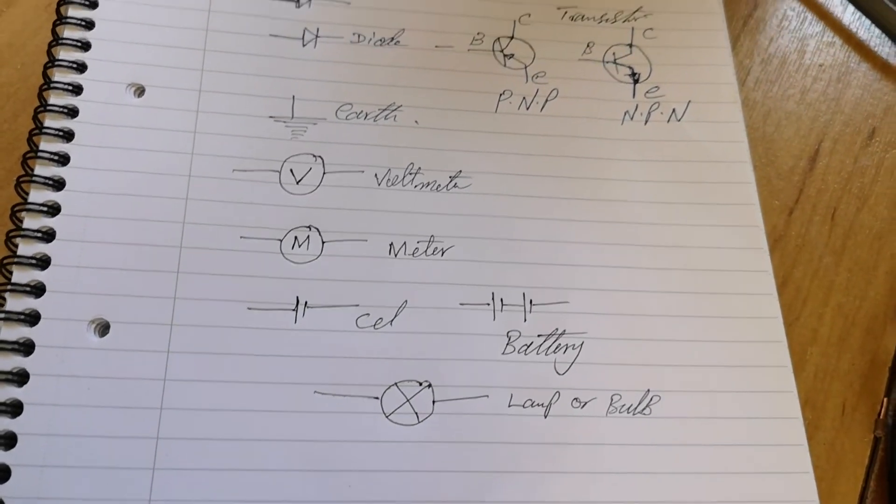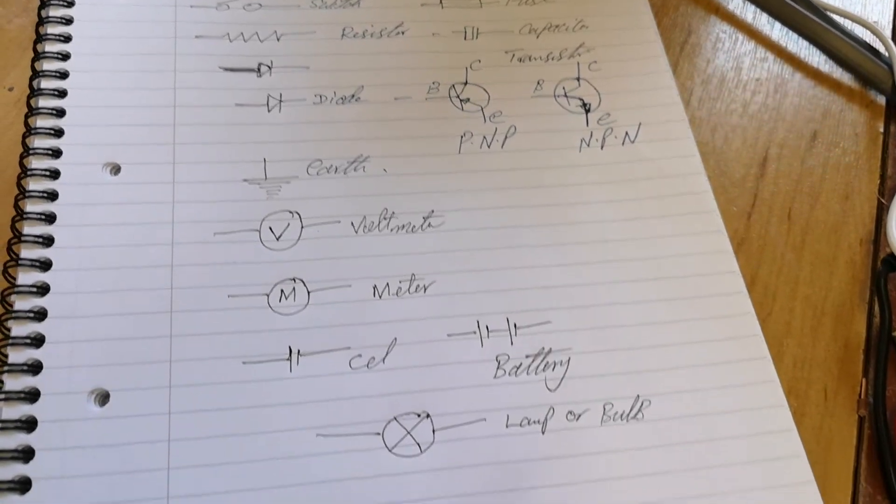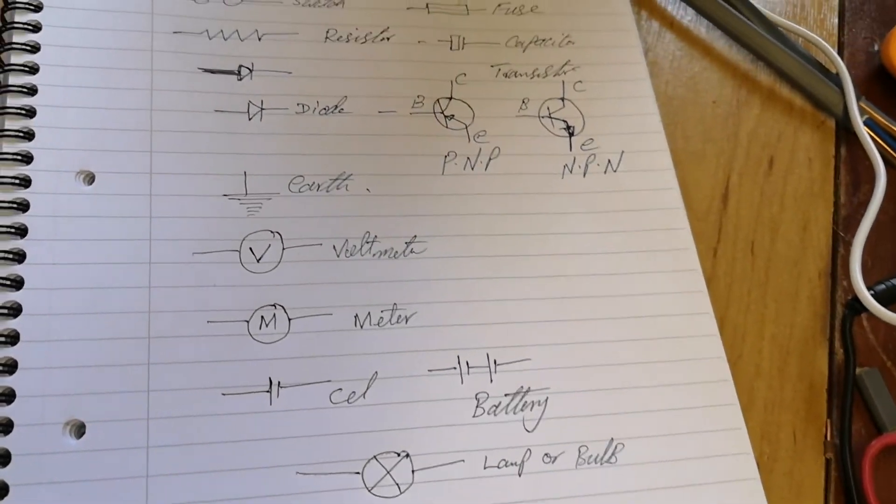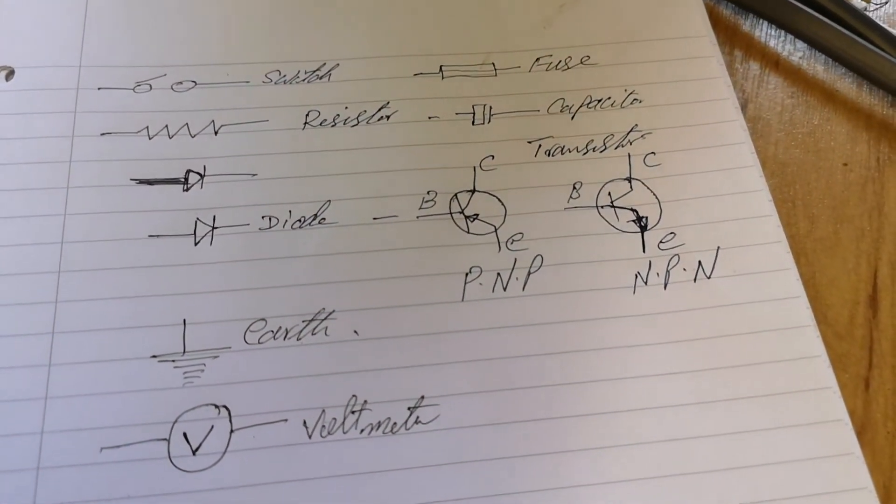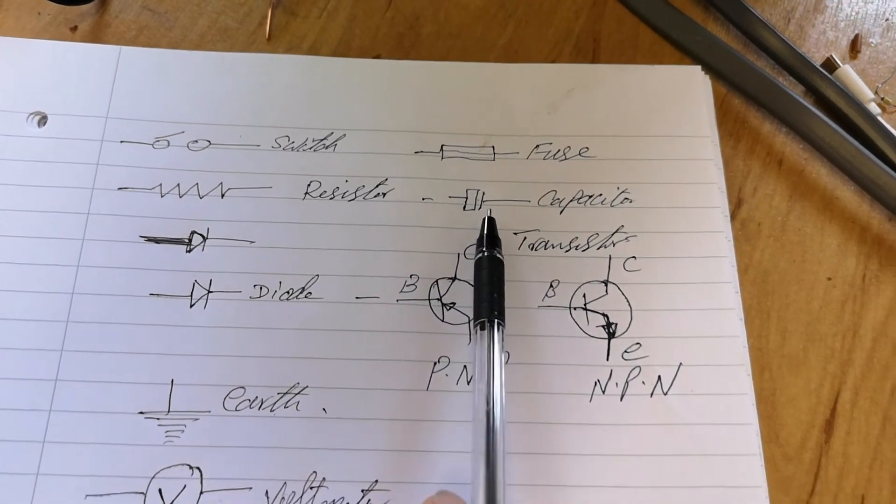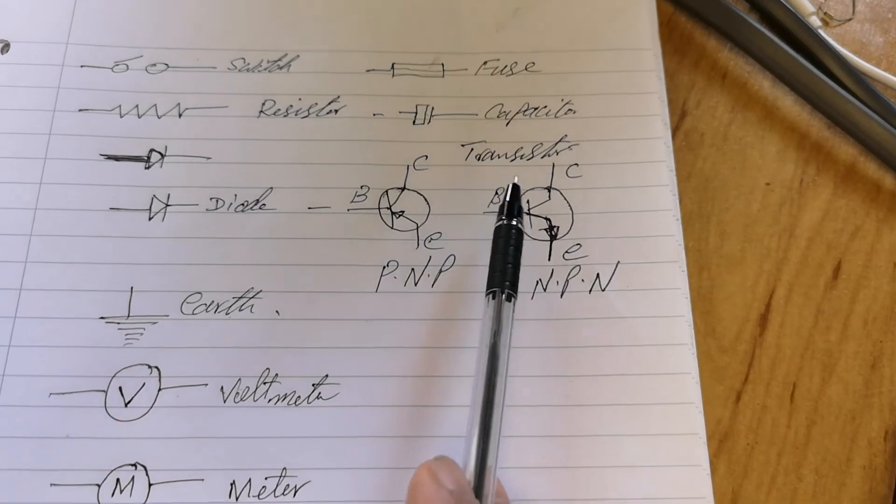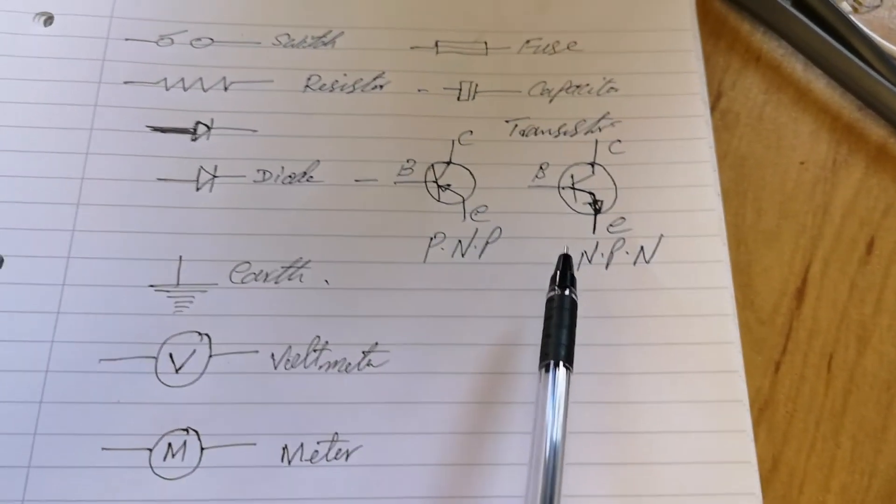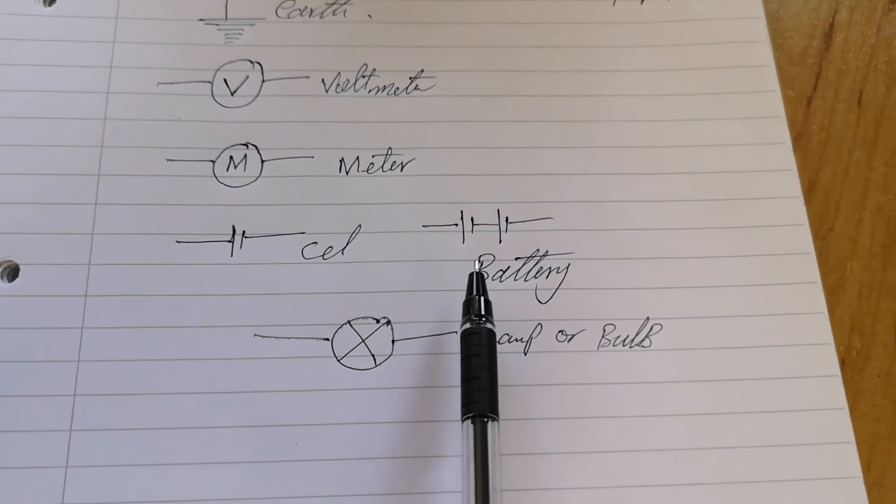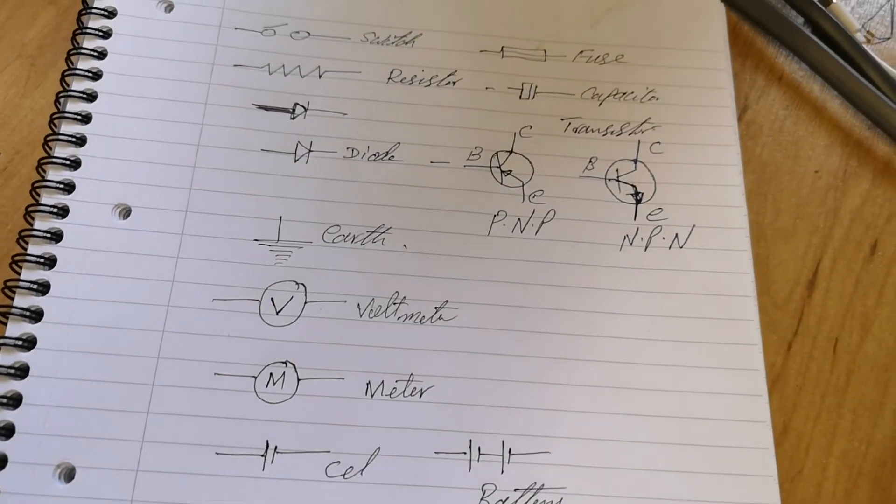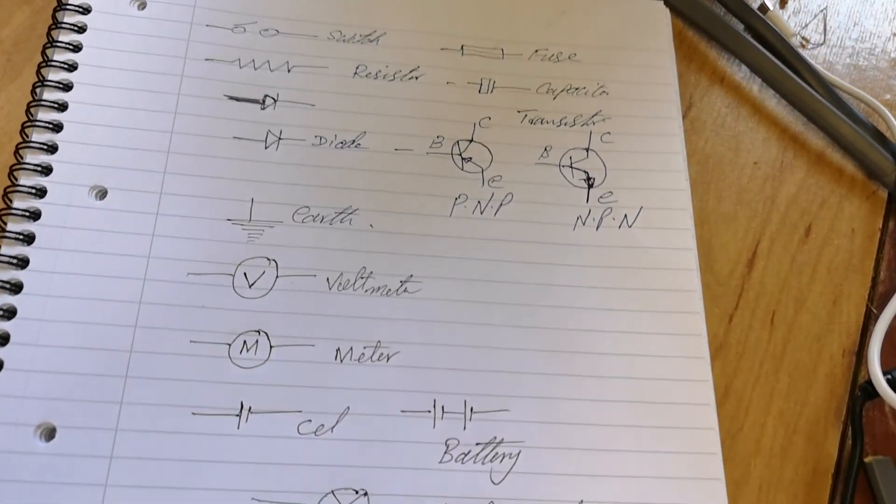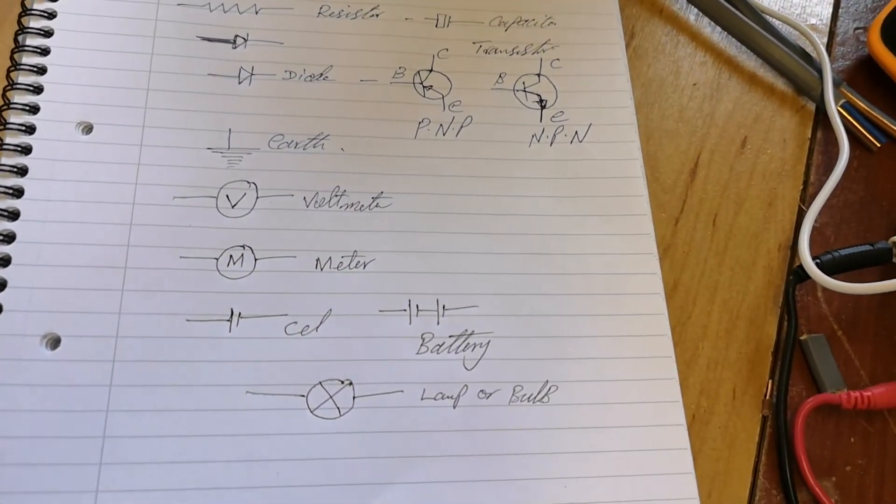Okay, so these are the very small and short symbols you require from the beginning. And there are so many thousands of them you could actually follow later. These are the very useful symbols: switch, fuse, resistor, capacitor, diode, transistor, PNP and NPN, earth, voltmeter, meter, cell, battery, and lamp. Okay, so these are symbols to start off with, and I will bring some more complicated symbols in the future. By then you will understand these and recognize them.